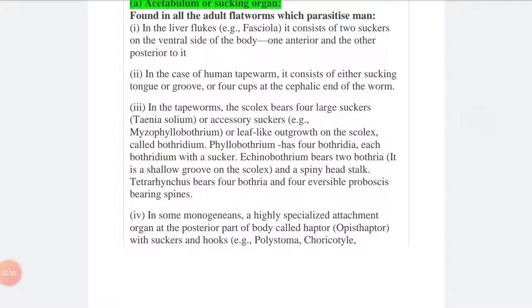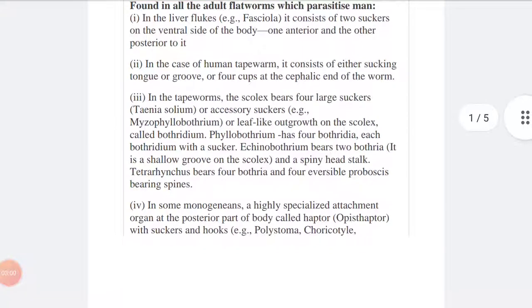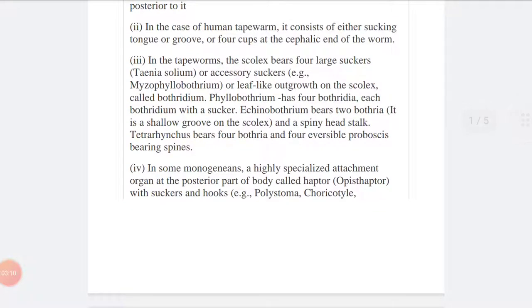Phyllobothridium has four bothridia, each bothridium with a sucker. Echinobothridium bears two bothridia, a shallow groove on the scolex, and a spiny head stalk. In other species, there are found many proboscis which have the spines.